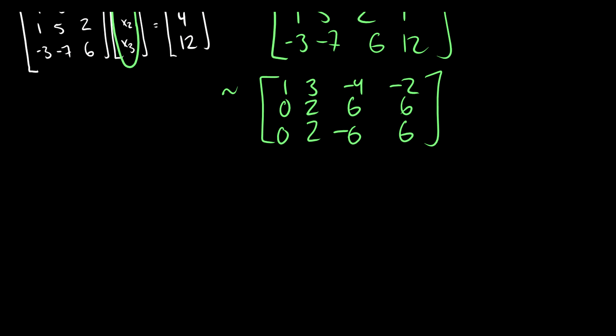So what do we see here? Well, first of all, let's just do some reduction, because why not? Let's multiply the second and third row by one half. So 2, 6, 6 will become 1, 3, 3. Two negative 6, 6 will become 1, negative 3, 3. And we can reduce if we want.